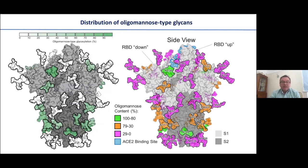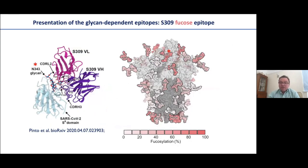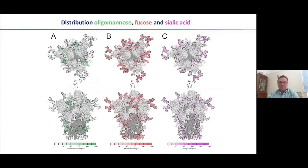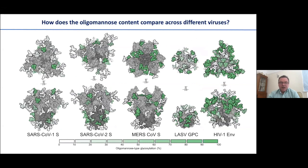Plotting onto the surface of the spike using a threshold showing only sites over 80% oligomannose in green, we see it's quite heavily processed compared to HIV. We still have a large region with an intermediate level of oligomannose shown in orange. A heat plot makes this easier to visualize: oligomannose glycans appear across the base of the spike but at much lower levels than in HIV. There's a reciprocal nature between oligomannose — where enzymatic processing isn't occurring — and complexity such as fucose. At the site recognized by the antibody we see almost complete fucosylation, showing recombinant material can reproduce epitopes of interest.